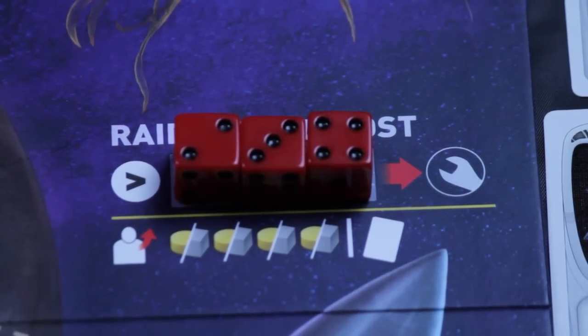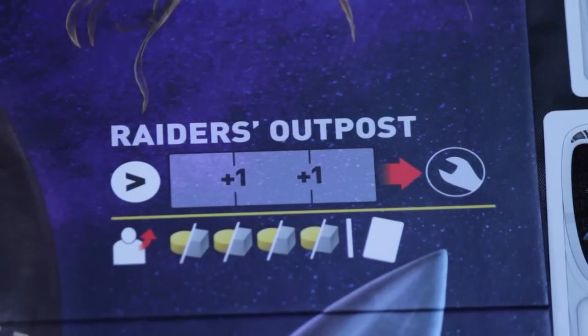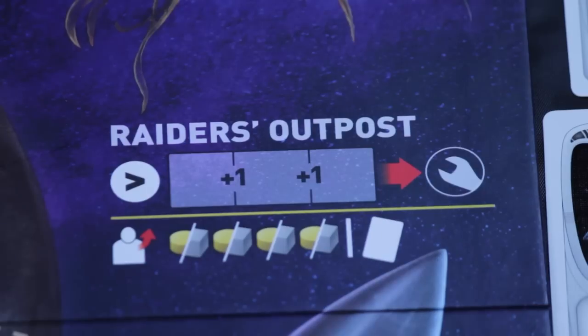There aren't a lot of interesting decisions here, other than whom to steal from, but this space adds a ton of interaction and allows players to somewhat catch the leader. So why would this space affect your feelings? Well, the rest of the game can be played very casually and friendly with some slight interaction through blocking and area control. Raider's outpost changes that.